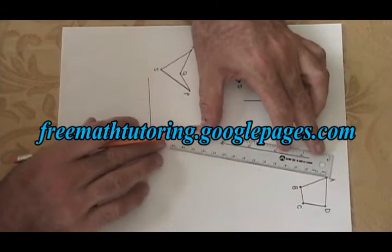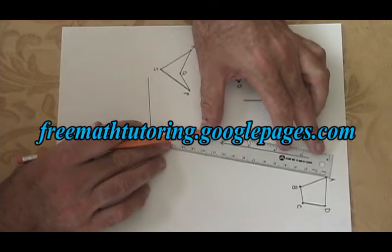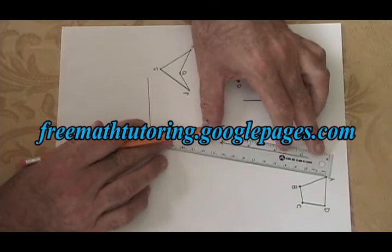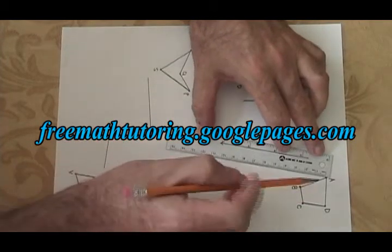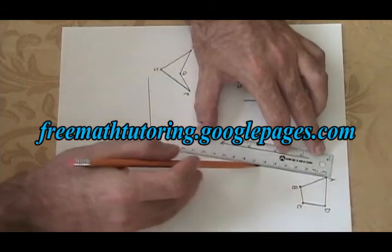We move the ruler so that it is zeroed on the closest vertex, and we swivel the ruler until the edge of the ruler is parallel to the translation line. And then we draw a line eight and a half centimeters long.